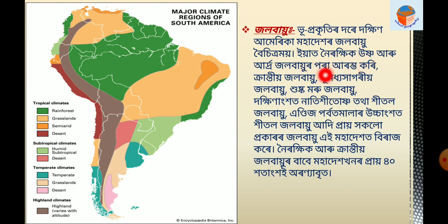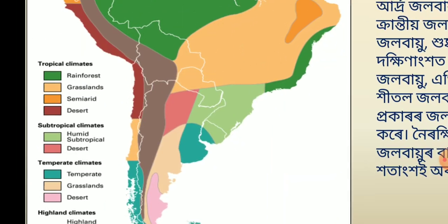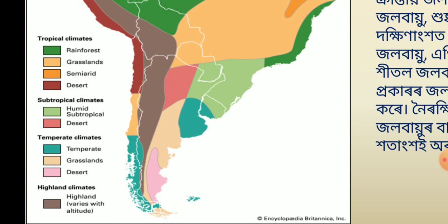The price is $50,000. We see that the price is very low and high. This price is very low. Tropical climate is low. Temperate climate is low. The price is low.